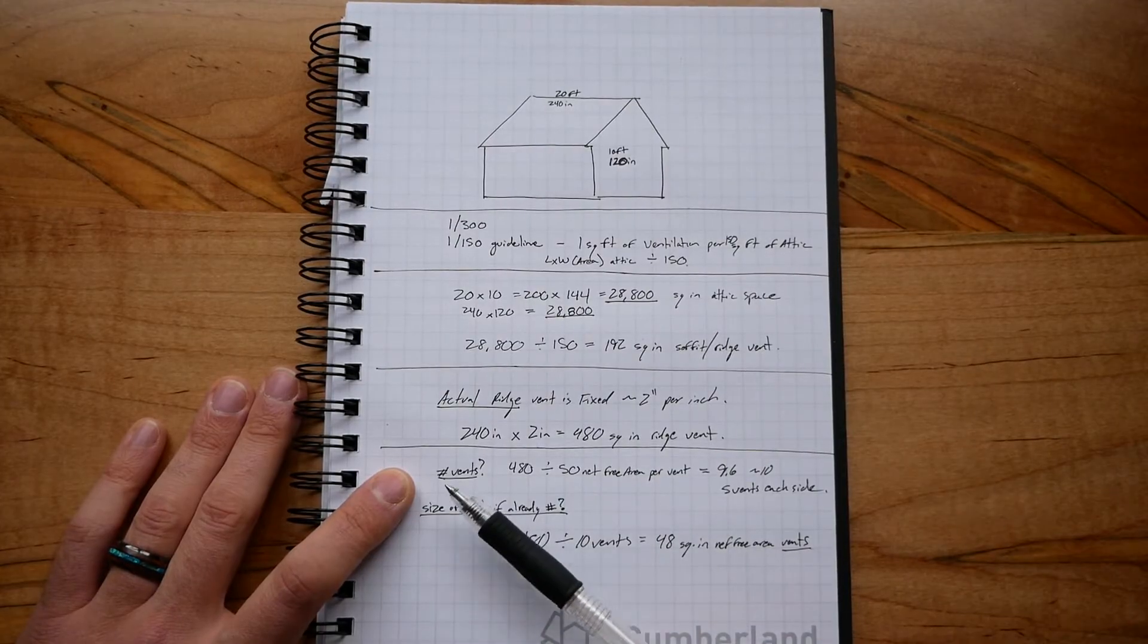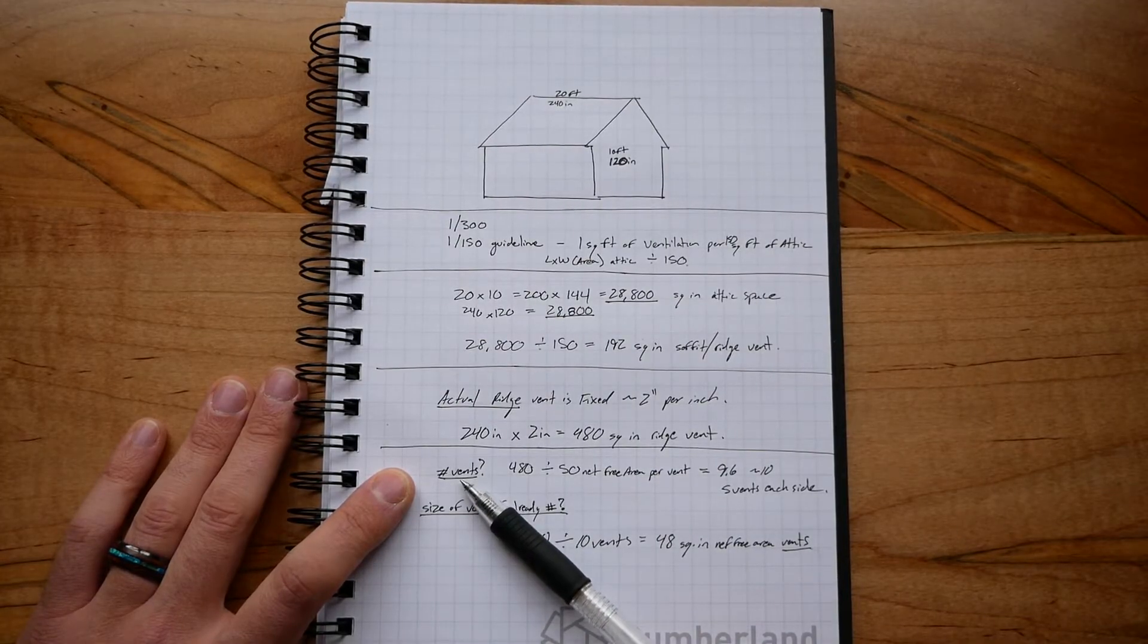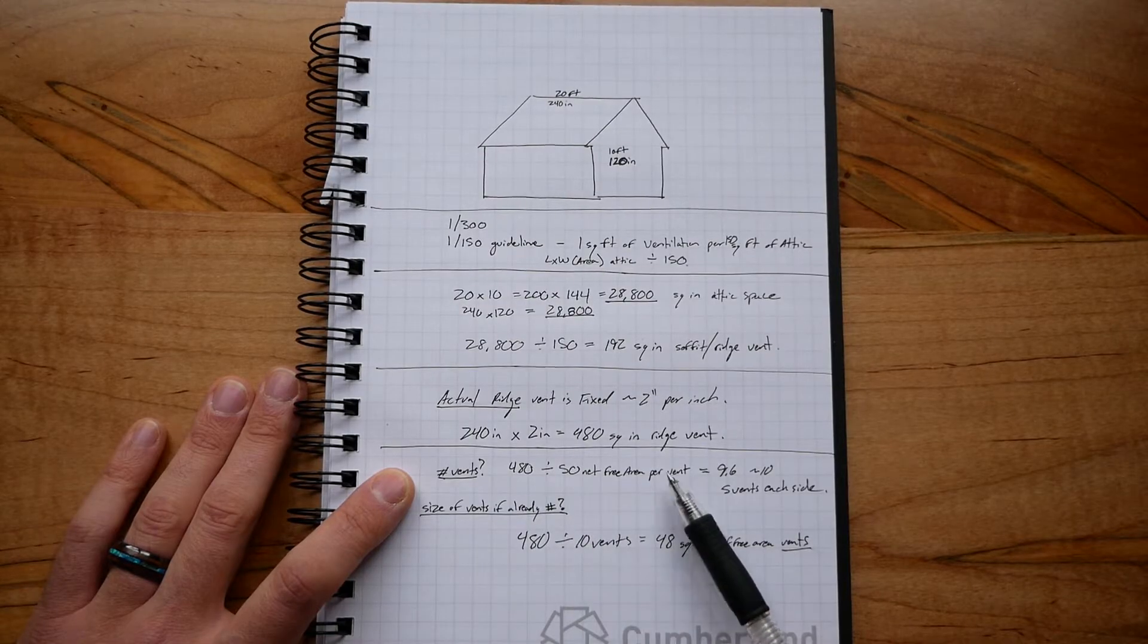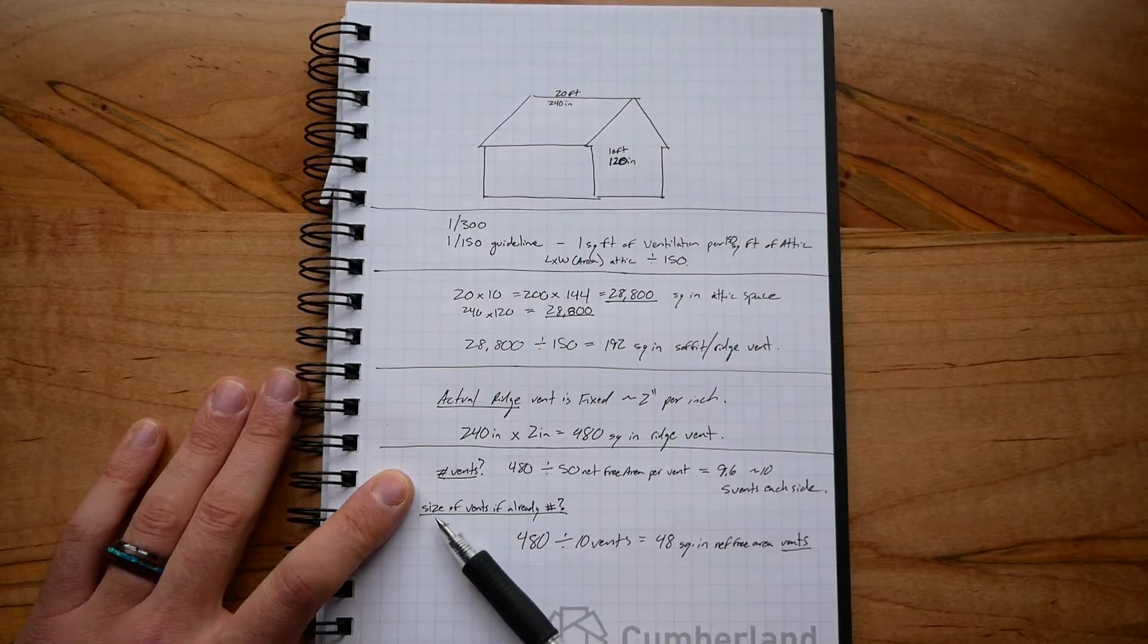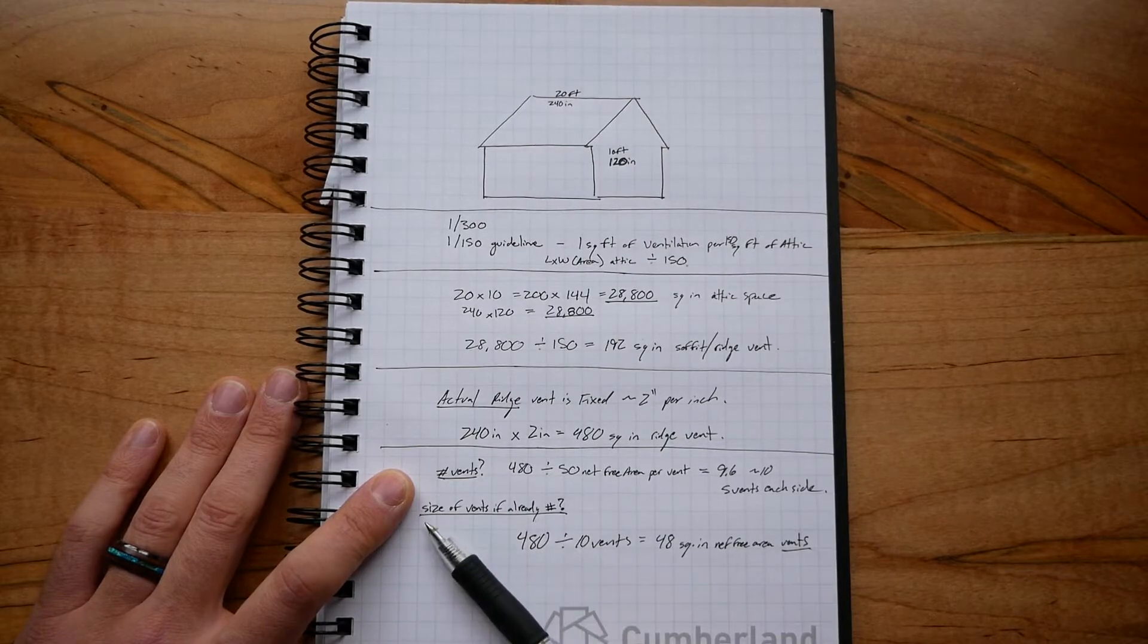We can calculate how many vents we would want on each side if we had a known size of the vent, or we can calculate, if we have a known number of vents, what size should they be.